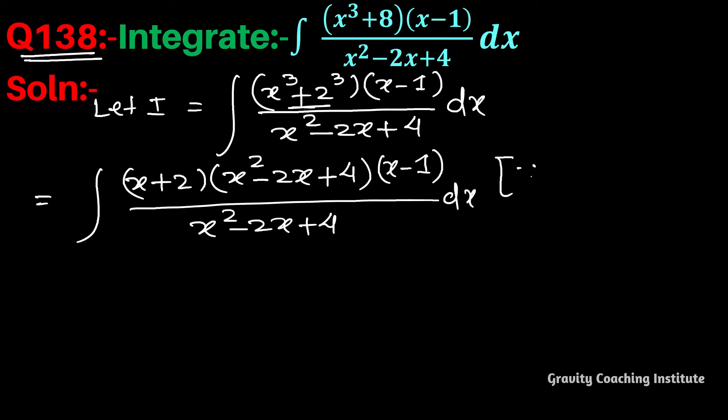Here we have applied the a³ + b³ identity in product form: (a + b)(a² - ab + b²). In this expression, the denominator part cancels out.